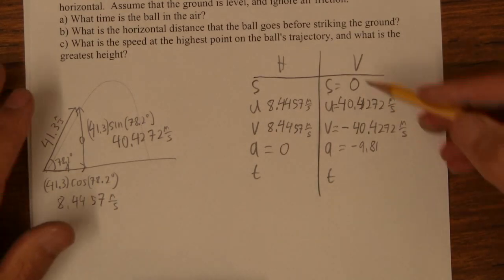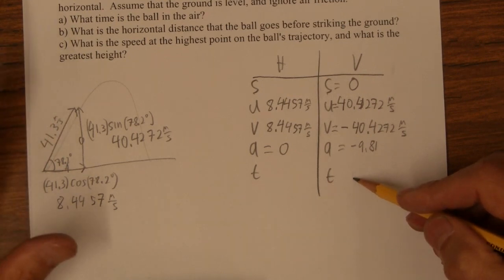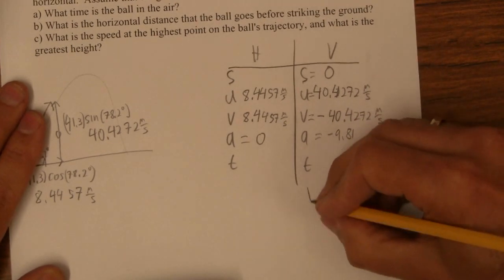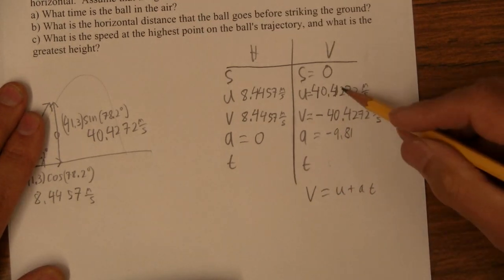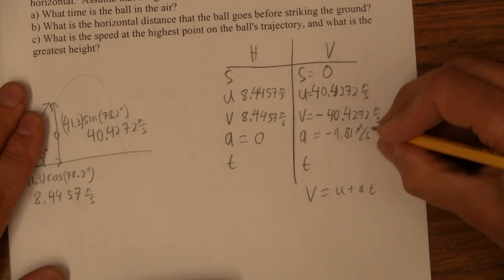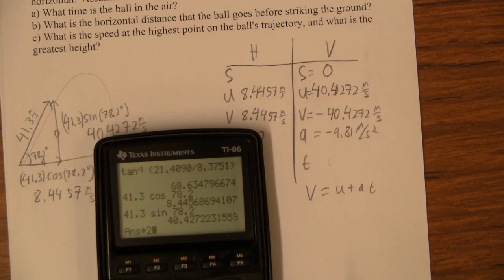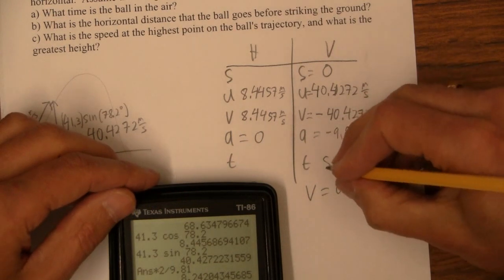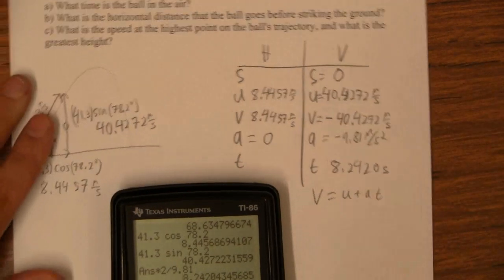That's what I'm going to use. And now we're set. We know like everything except time. There's two ways to find the time. You could use ut plus half at squared, but I'm going to choose this guy, v equals u plus at. Here's my initial velocity, final velocity, acceleration meters per second squared. So that's just going to be that times two divided by 9.81. So this thing is going to be in the air for 8.2420 seconds.